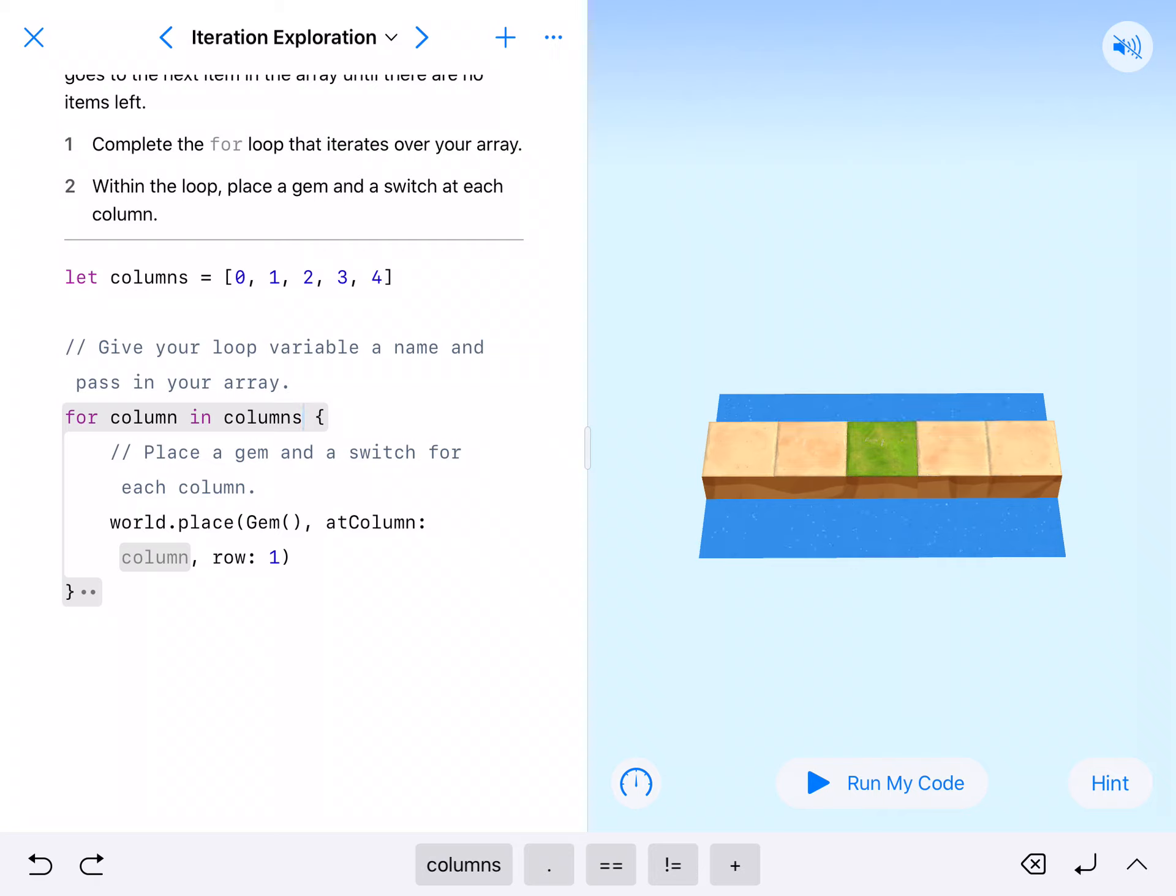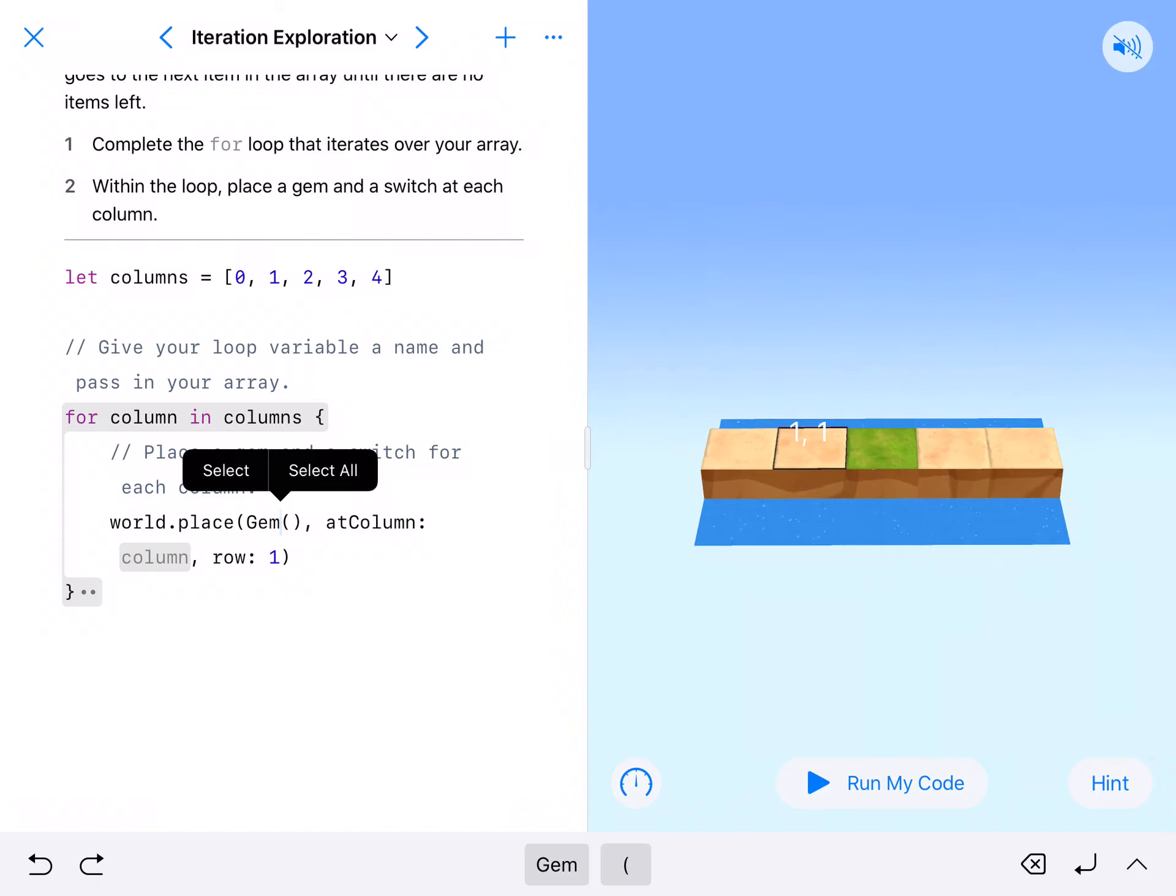It says place a gem and a switch for each column. We already have gem down, and we need to figure out what column. It's all going to be in row one.